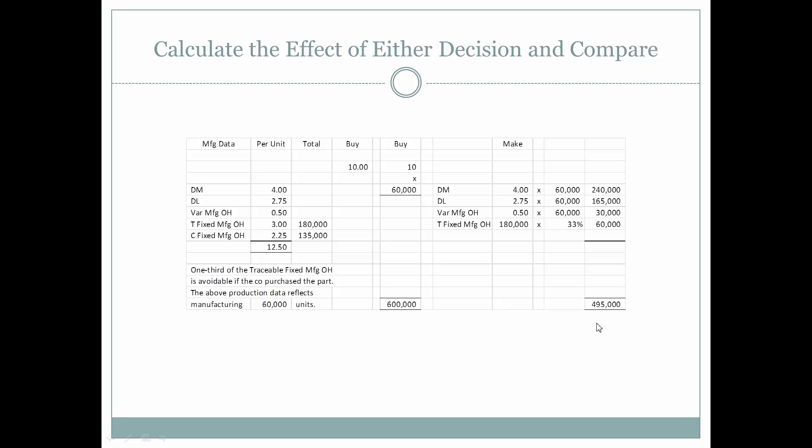We find that in order for us to make the product, it's going to cost us $495,000. In comparison to what it would cost to purchase the product, we can see that it would be cheaper to make the product. Now, let's add some other factors in.